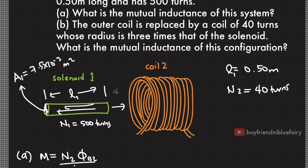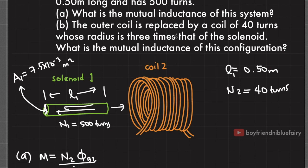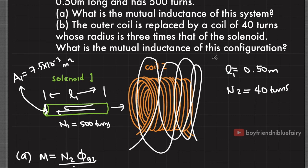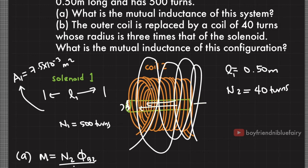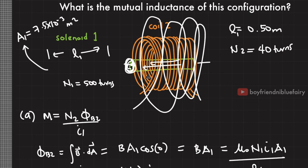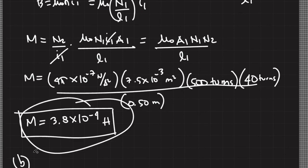For Part B, the outer coil is replaced by a coil of 40 turns — the same number of turns — but with a radius 3 times that of the solenoid, giving a bigger coil. Even if we increase the radius of coil 2, the only relevant flux is the flux through area A_sub_1, the area with a non-zero magnetic field, since the magnetic field outside the solenoid is zero. Hence, even if the radius of coil 2 increases while the solenoid area stays the same, the magnetic flux remains the same and the mutual inductance is unchanged — also 3.8 × 10⁻⁴ Henry.